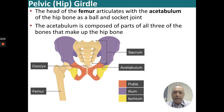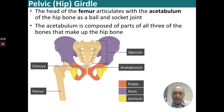Taking the hip bone apart, we have the ilium, which is the main portion of the hip bone; the pubis, which contains the pubic symphysis cartilage; and then the ischium posteriorly. The head of the femur is going to articulate where all three bones meet at the acetabulum. You can also see the sacrum and the coccyx.